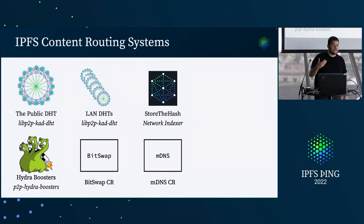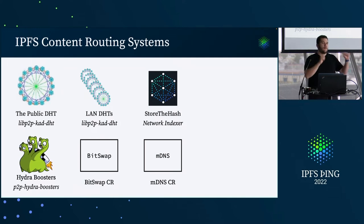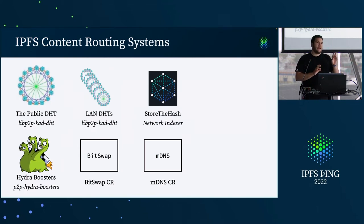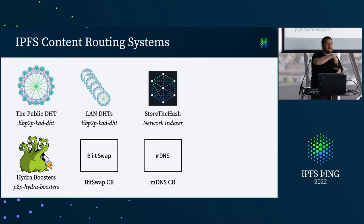There are many existing content routing systems out there — this is probably not even a full mapping, just the most widely used ones. The public DHT is by far the most common content routing system. There are also automatic local area network DHTs that form. Most Kubo and a couple other implementations do this: when they disconnect from the rest of the world, they form automatic DHTs in the LANs.